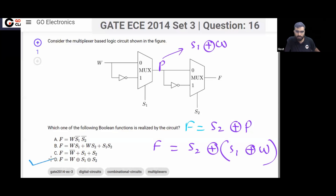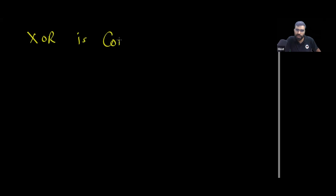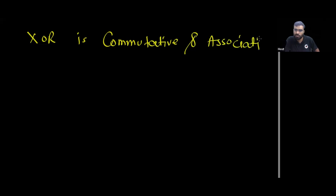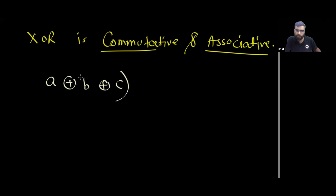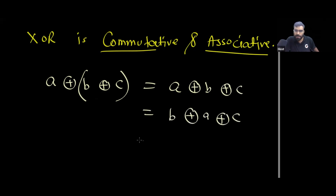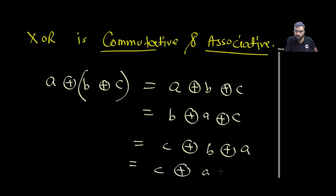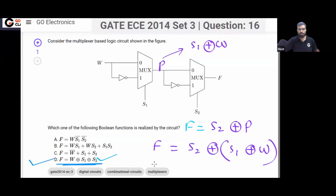So your answer will be option D. Remember, XOR is commutative and associative. So if you have an equation like A XOR B XOR C, you can write it as B XOR A XOR C, or C XOR B XOR A, or any order you want. Because XOR is commutative and associative, finally the answer is option D. Very simple question.